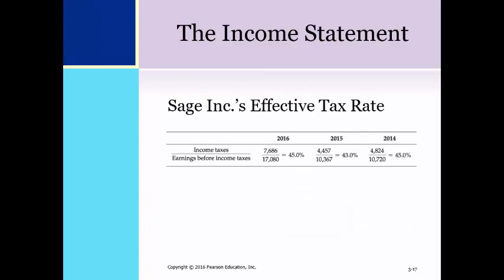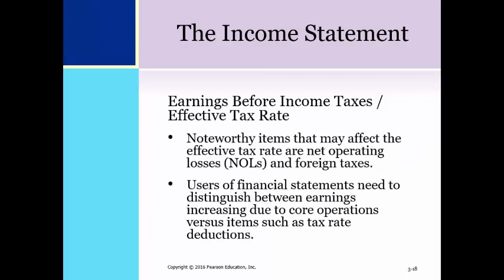This is an illustration of the calculation of the effective income tax rate for Sage Inc. for years 2014 through 2016. The effective rate dipped somewhat in 2015 but returned to 45% in 2016. It is important to note that the effective tax rates can be affected by net operating losses and foreign taxes. Carry-forwards of net operating losses can offset future earnings, and foreign tax rates can be lower than U.S. tax rates. Users of financial statements need to be aware of the difference between earnings increases due to core operations versus items such as tax rate reductions in assessing earnings quality.